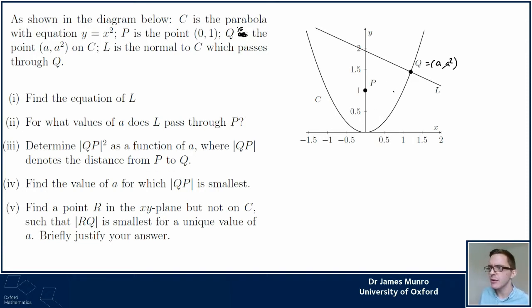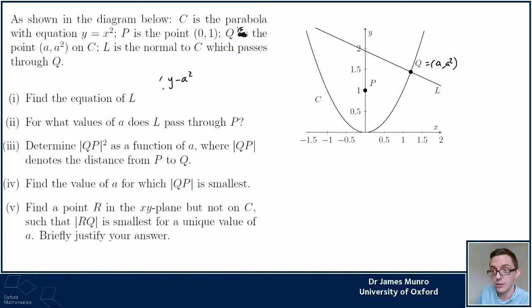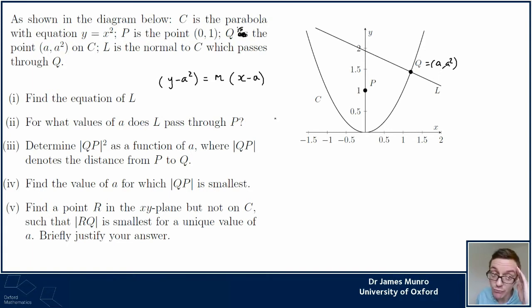Parts three and four seem to be about finding the point for which QP is smallest - which feels like it might be the same point. I'm going to start trying to do this question. My preferred method for the equation of L is to write: y − y-value = gradient × (x − x-value), at the point (a, a²). Now I've got to think carefully about what the gradient is.